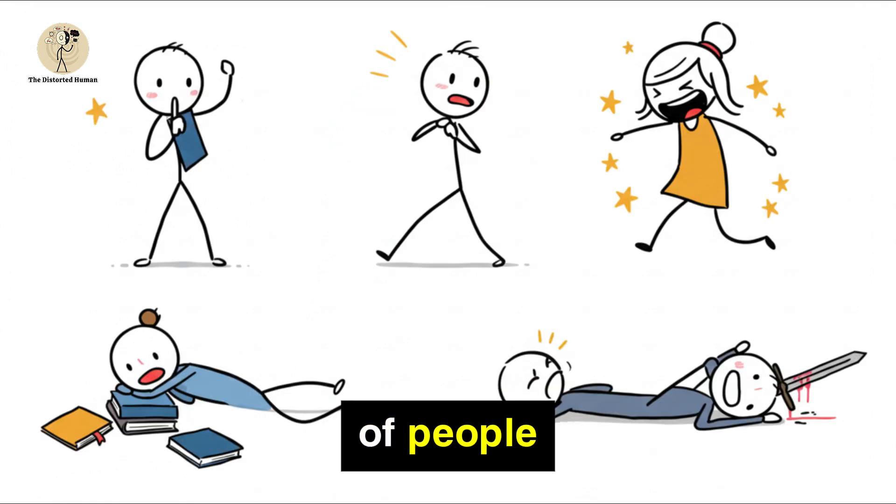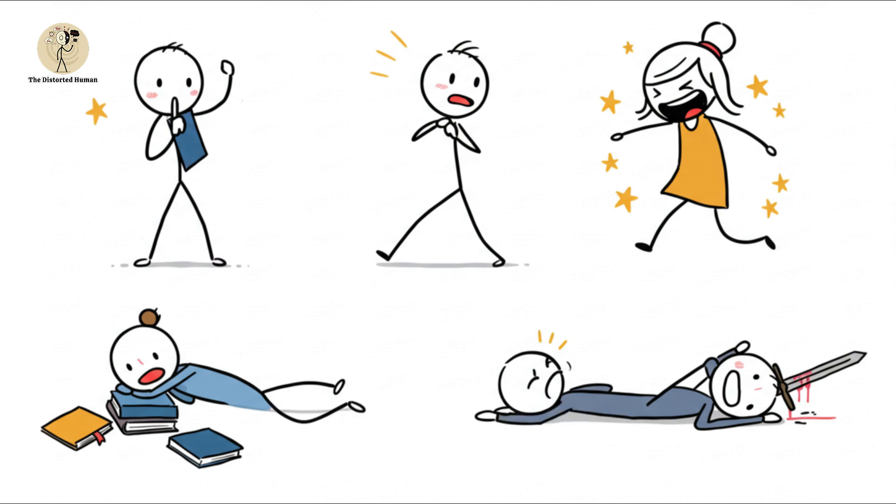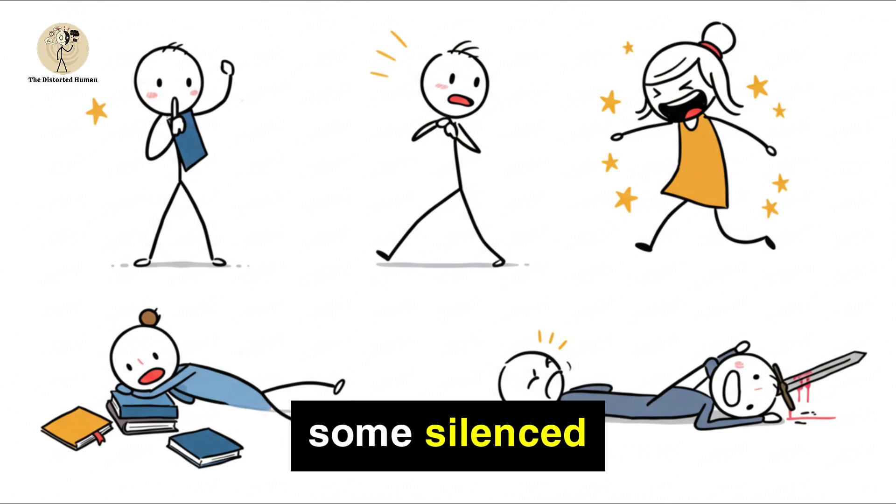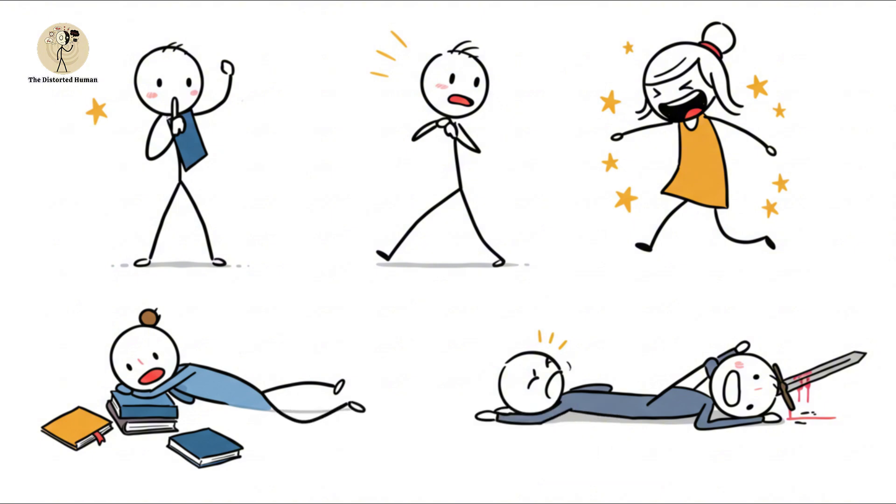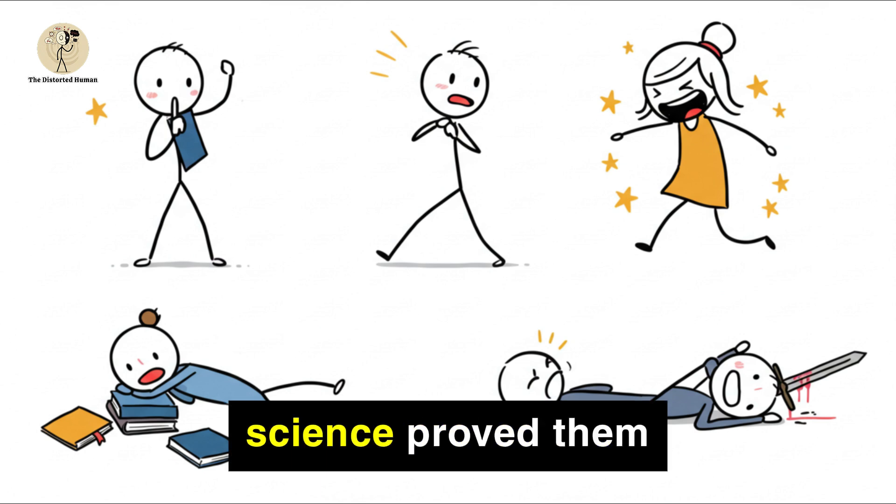History is full of people who were punished for asking the wrong questions. Some were mocked, some silenced, and others, like Giordano Bruno, were killed for daring to think differently. Yet centuries later, science proved them right.